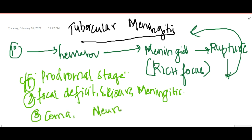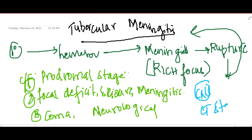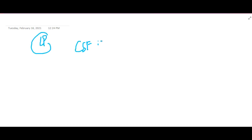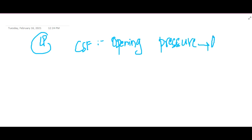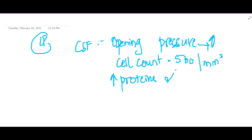On CT scan, you will find enhancement of basal meninges, hydrocephalus, and tuberculoma with perilesional edema. On lumbar puncture and CSF study, the opening pressure is increased, cell counts are around 500 per mm³, proteins are increased, glucose is decreased, and a cobweb coagulum is seen.